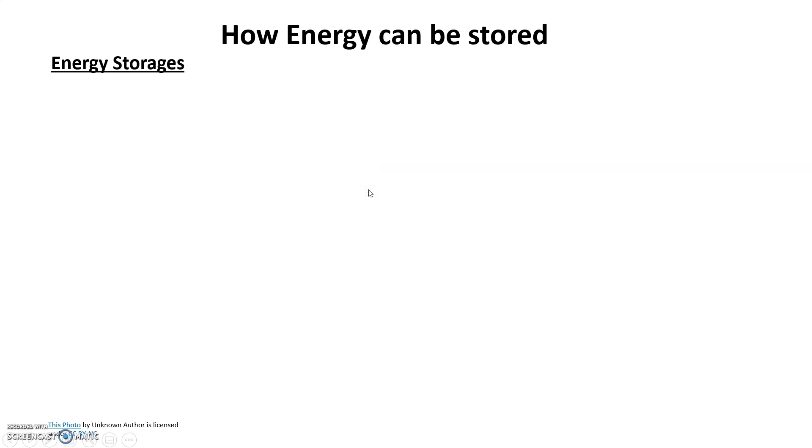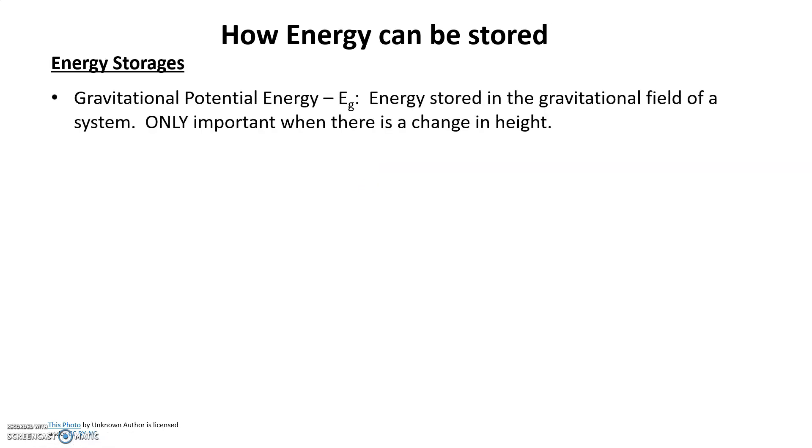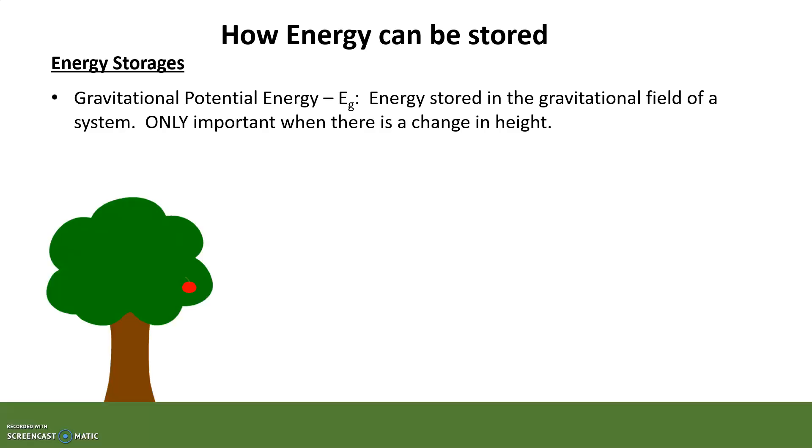The different energy storages we're going to look at are gravitational potential energy, which we use the symbol EG for. That's energy stored in the gravitational field of a system. It's only important when there is a change in height. For instance, we have this apple falling from a tree. As the apple falls, the height decreases, and so too does the EG decrease.